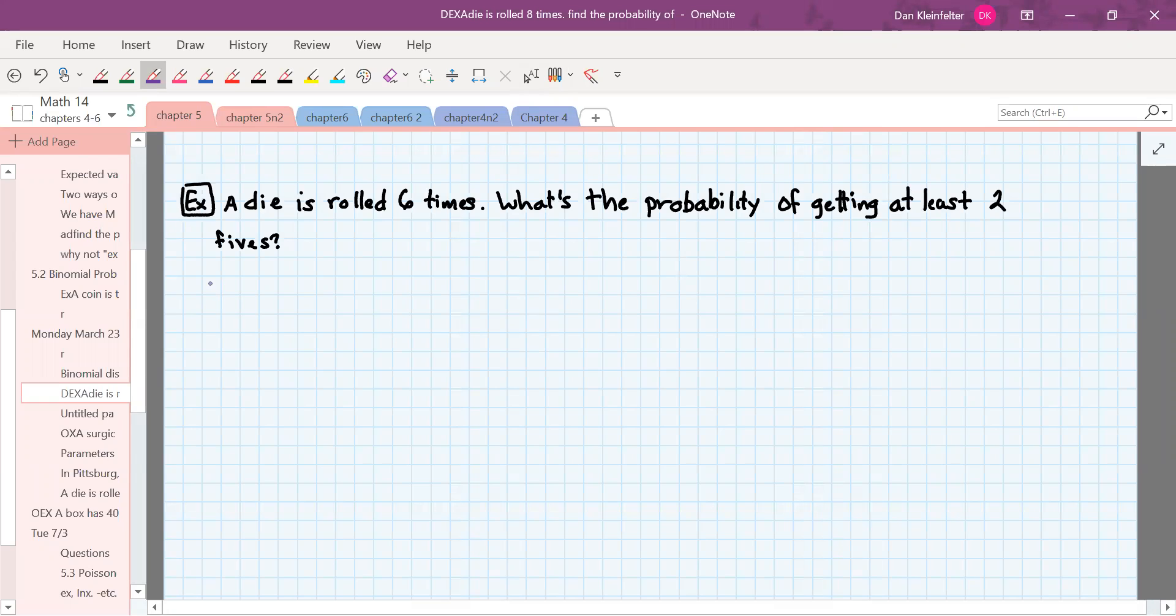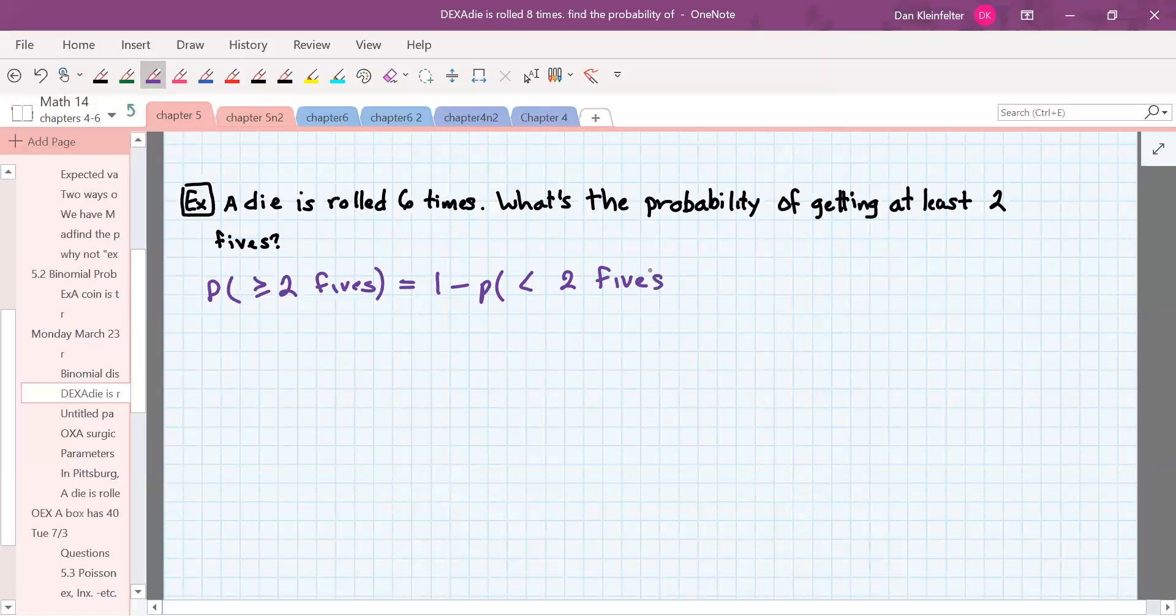what is the probability that this fails to be true? If you don't get at least two fives, what has to happen? If you don't get at least two fives, then you have to get fewer than two fives. So that will be one minus the probability of getting less than two fives. Less than two fives would be just either zero or one. So let's find that. We'll still have to use the binomial formula twice, but that's better than doing it four times, right?